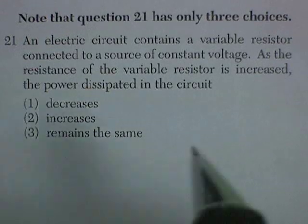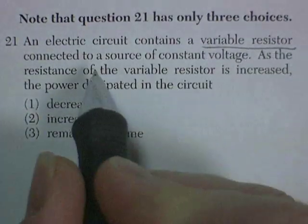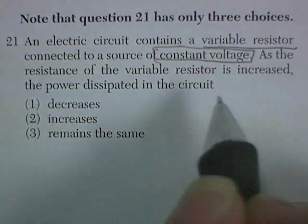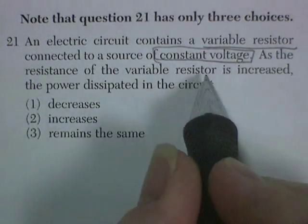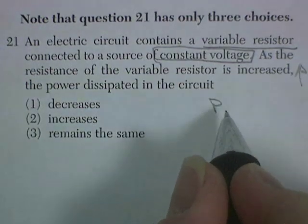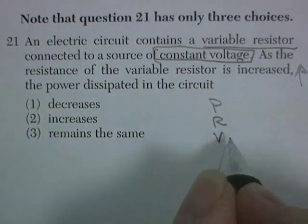Question 21. An electric circuit contains a variable resistor connected to a source of constant voltage. As the resistance of the variable resistor is increased, the power, well, we've got power, we've got resistance, and we've got voltage.